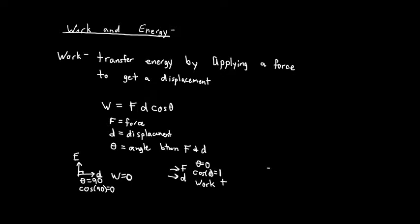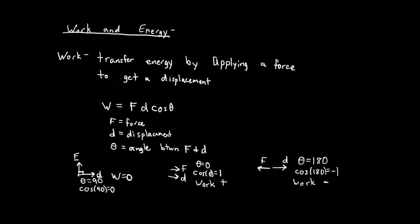You can also have situations where your force is acting one way — maybe backwards — but your displacement results in going the complete opposite direction. This is anti-parallel, where the angle between the two is 180 degrees. The cosine of 180 degrees equals negative one, so the work done by this force is a negative value. Those are three good examples of how work is actually defined.